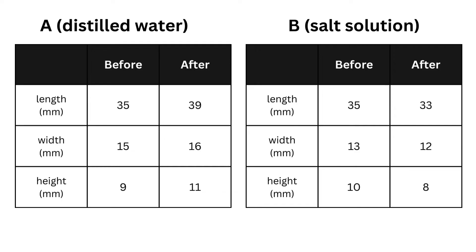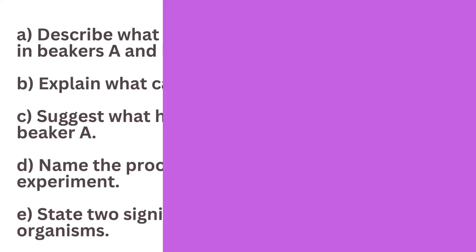Potato B measured at a length of 33 millimeters, width of 12 millimeters, and height of 8 millimeters, indicating a decrease in size.